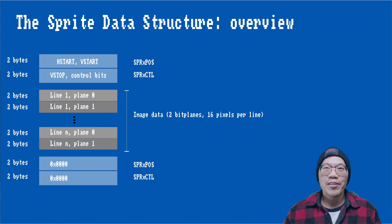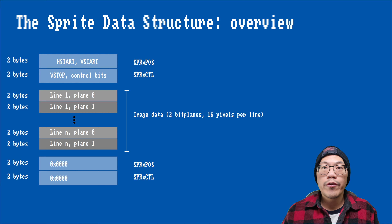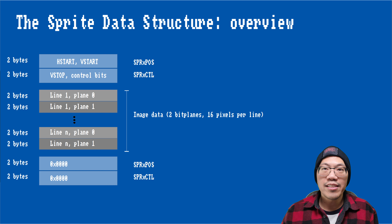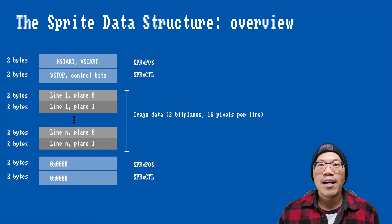Let's start working on getting our first sprite on the screen. To understand what we need to do, let me explain the data structure that is at the center of it all. The Amiga has eight individual sprite DMA channels, and here we will set sprite channel zero's data pointer to an array of 16-bit words. The first word corresponds to the sprite position register, and the second one to the sprite control register. Following that are alternating lines where each word represents 16 pixels of the sprite's plane data.